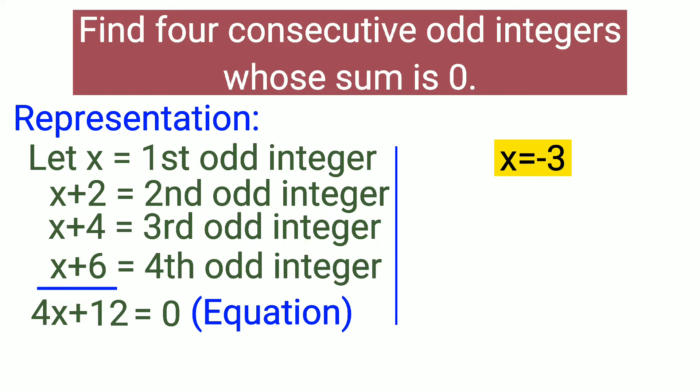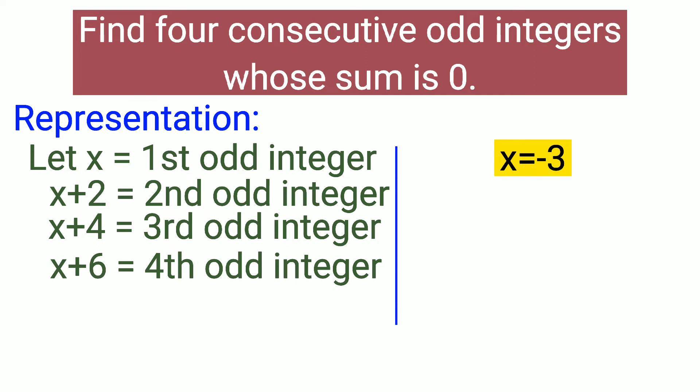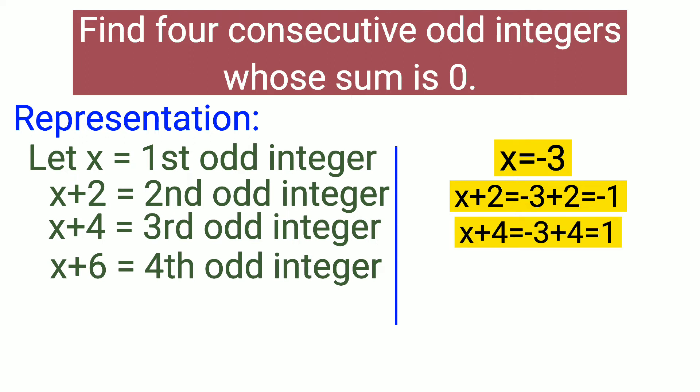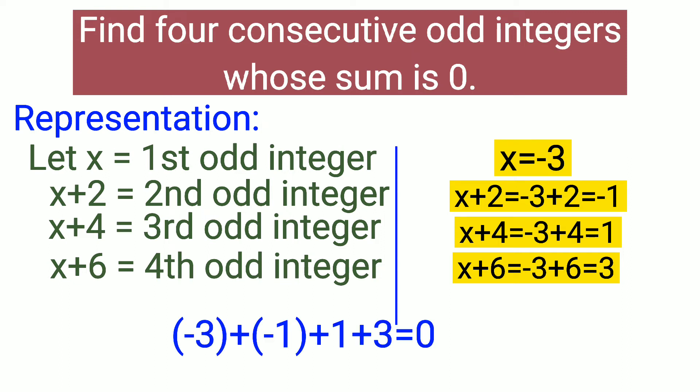Let us now find the other odd integers by substituting the value of x into our representations. Our second odd integer is negative 1, our third odd integer is positive 1, and our fourth odd integer is positive 3. To check if all our answers are correct, we are going to add all the integers, and the sum is equal to zero.